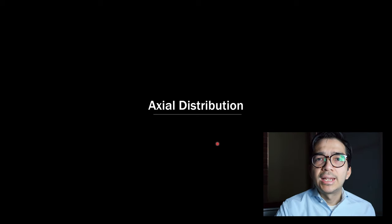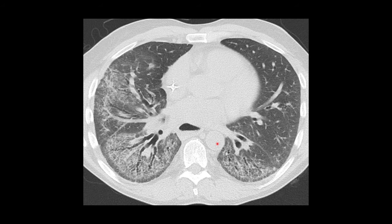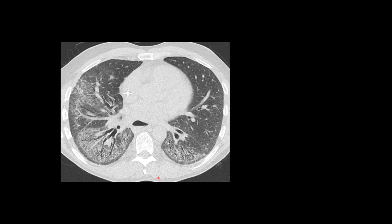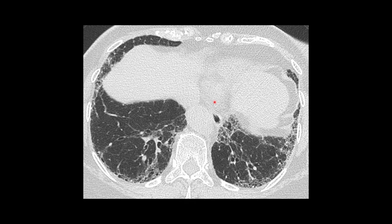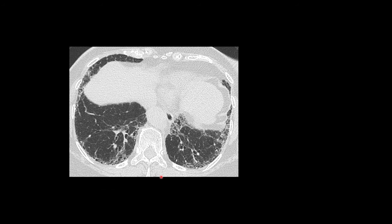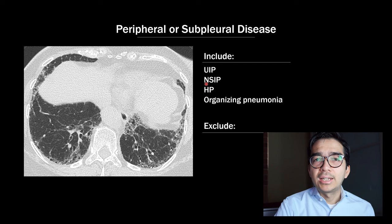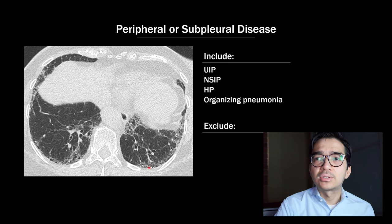The second type of distribution is the axial distribution. It's very helpful if the axial distribution shows a lot of disease in the central or peribronchial portion of the lung with subpleural sparing in the periphery, because in that case you can exclude UIP. I would include things like sarcoid, NSIP, HP, and organizing pneumonia. Now the reverse is not as helpful — if you have predominant disease in the periphery or subpleural part of the lung, I would include UIP, NSIP, HP, and organizing pneumonia, and I wouldn't necessarily exclude things based on that distribution alone.